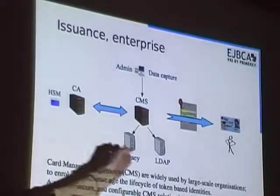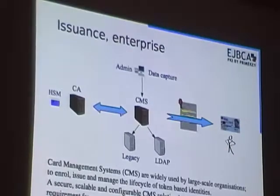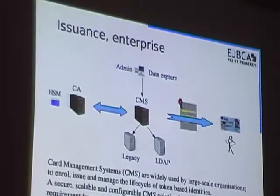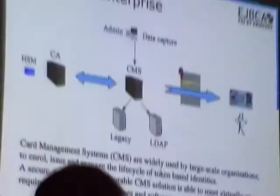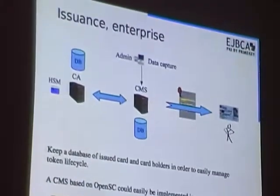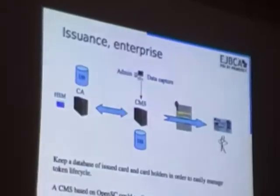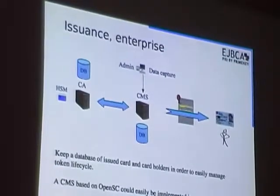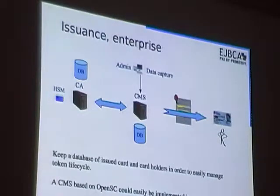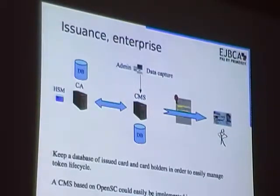The CMS has a lot of integration points. It can integrate with LDAP and legacy systems so that when you provision a user with a smart card, it's also distributed in the organization to all the relying third parties. You usually have several databases. The Certificate Authority has a database with certificates to manage revocation lists, etc. The card management system also has a database with ID numbers of the cards, so you can keep track of which person got which smart card.